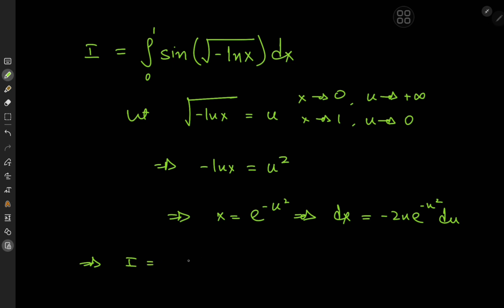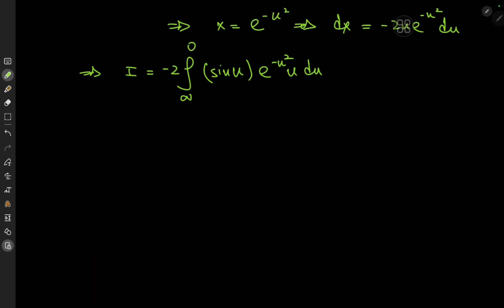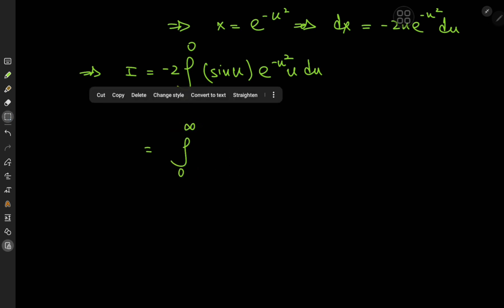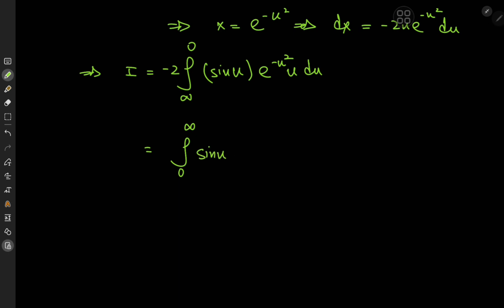This implies that the transformed integral is the negative of the integral from infinity to 0 of sine of u, multiplied by e to the negative u squared times 2u du. The limits look a bit strange, so we switch them up — that introduces an extra negative sign to cancel out the one we already have. So we have the integral from 0 to infinity of sine u times 2u times e to the negative u squared du.